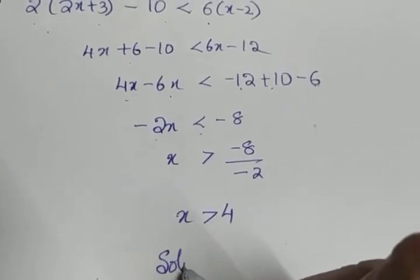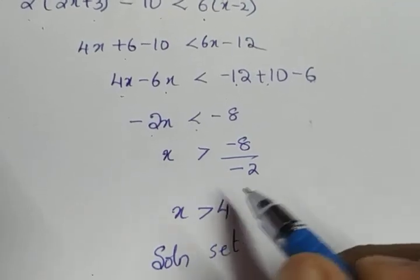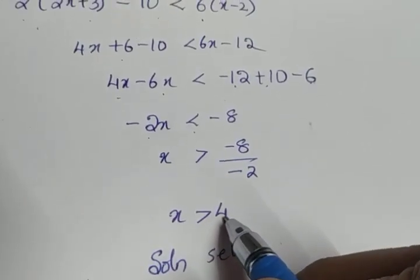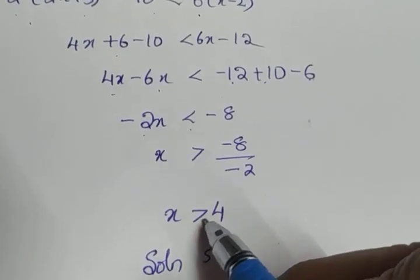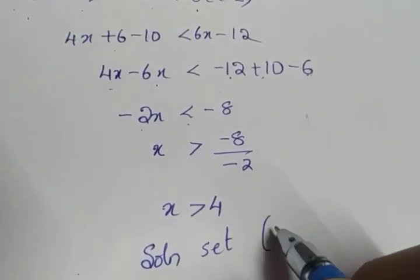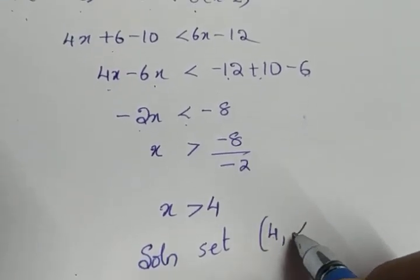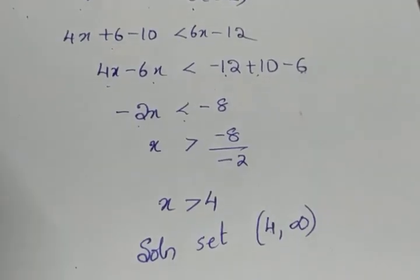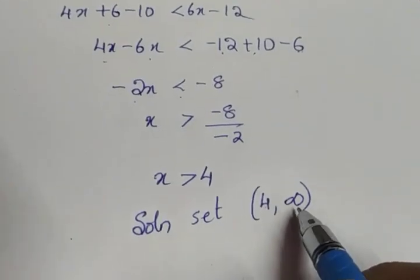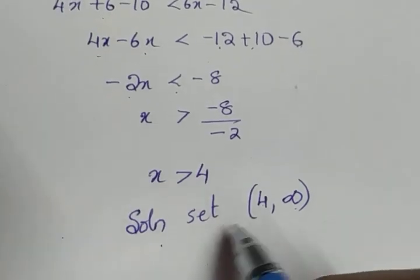What about the solution set? The solution set contains all real numbers which are greater than 4, excluding 4 because equal is not there. So the solution set will be open interval (4, and it can take any value greater than 4, so maximum value infinity. Solution set is (4, ∞).